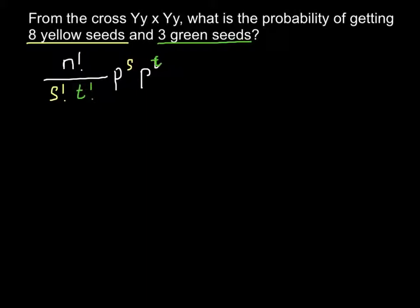Now let's try to apply it. For n, the total number of events, we would have 11, because 8 yellow seeds plus 3 green seeds equals 11, so we put 11 here. We divide by the number of s events — that is 8 yellow seeds — factorial, and 3 green seeds would be 3 factorial. Also, the probability of event s is 8 yellow seeds.